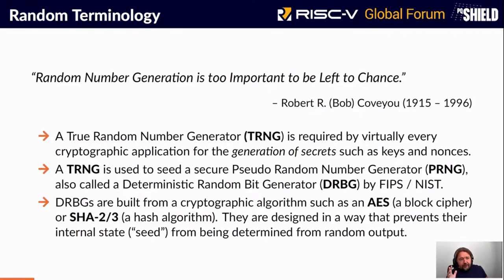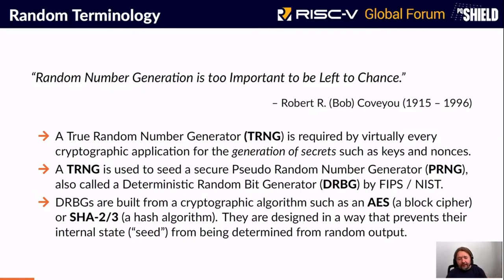A TRNG — a true random number generator — is a big part of any crypto ISA because that's where the secret keys, random nonces, and such must come from. You need to have a non-deterministic random number source somewhere. In FIPS, a cryptographic random generator is called a deterministic random bit generator, DRBG. These build a PRNG from cryptographic components like AES, a block cipher, or hash functions SHA-2 or SHA-3. This makes it possible to produce large amounts of random output bits in a way that doesn't reveal the seed, so you don't have to re-seed often. Getting to the random seed from the output would be equivalent to breaking AES.